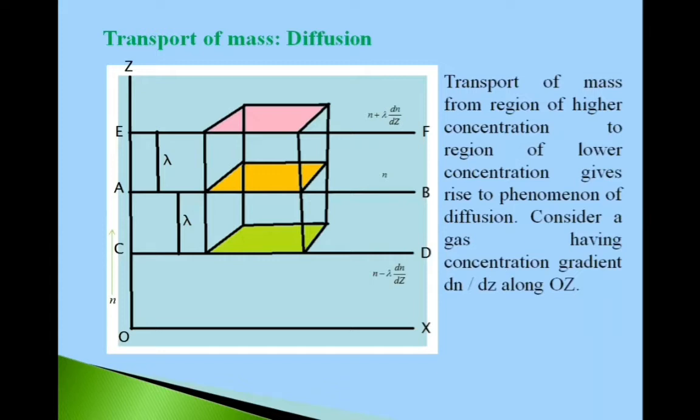Now consider a gas having concentration gradient dN by dz along oz direction. See here, concentration gradient dN by dz along this oz direction. This gas is shown here and three layers of gas have taken for study: this AB layer of gas, this CD layer of gas, and this EF layer of gas.